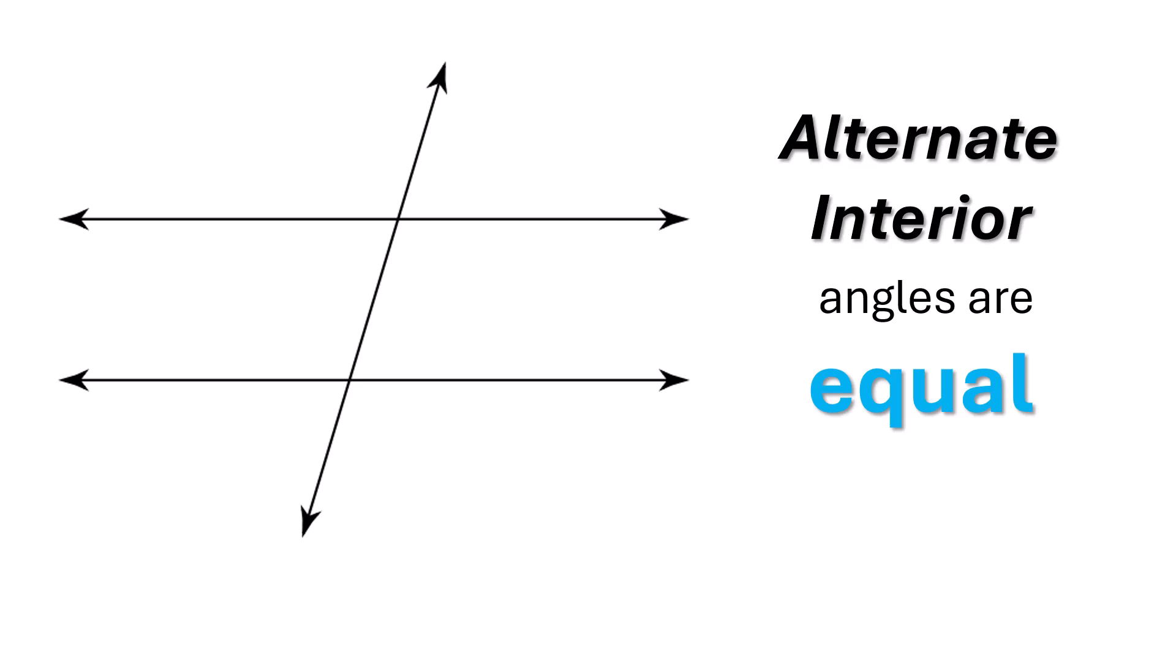Alternate interior angles are equal. Alternate interior are here. They are between the parallel lines, but they are on opposite sides of the transversal. So red is congruent to red. Yellow is congruent to yellow.